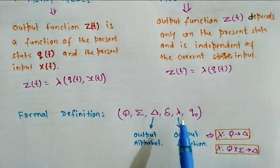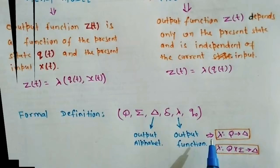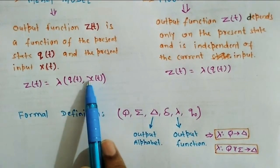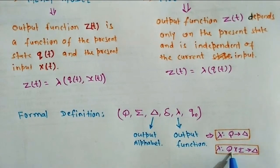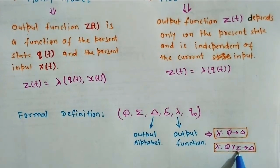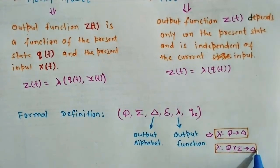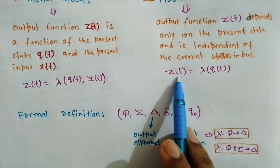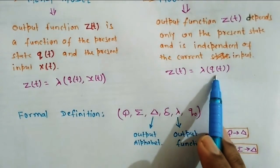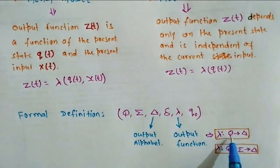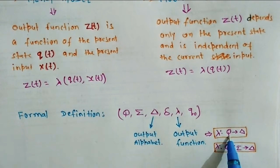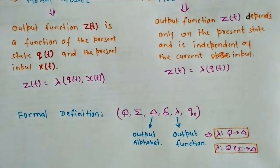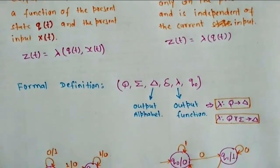Now we will define the output function in detail. In the Mealy machine, the output function depends on states as well as inputs — it takes a state and an input and generates some output. In the Moore machine, the output depends on the present state only, so the function is defined by a particular state generating some output. Now we will understand these two models using examples.